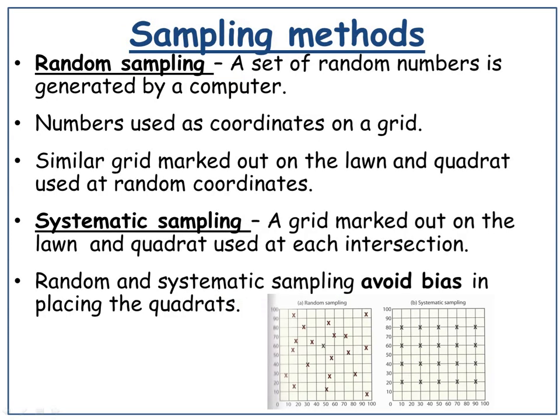There are two types of sampling methods. There's random sampling, where you get a set of random numbers generated by a computer — a random number grid — and you would use the coordinates as a grid. You would mark out a similar grid on the lawn and put the quadrat at random coordinates. It's a bit like plotting a graph: if the coordinates said 9, 8, you would go 9 metres on the x-axis and 8 metres on the y-axis, and then drop your quadrat wherever they meet.